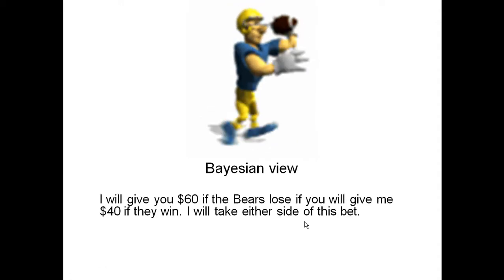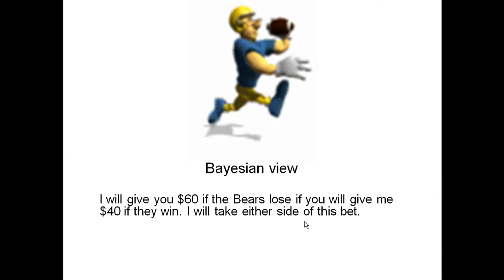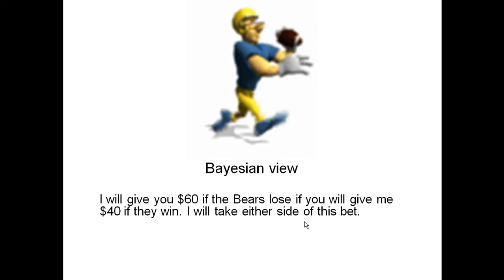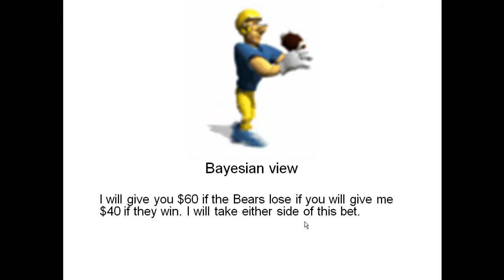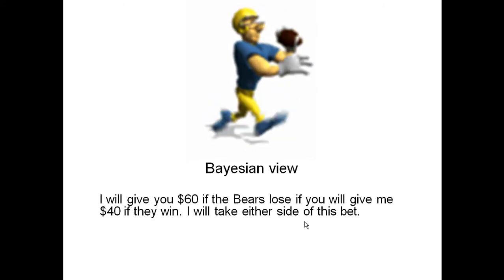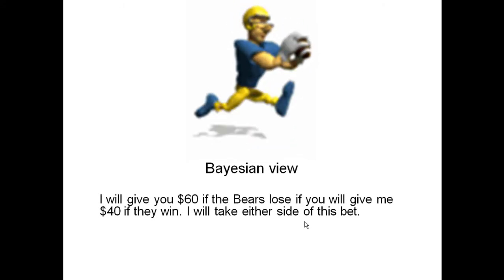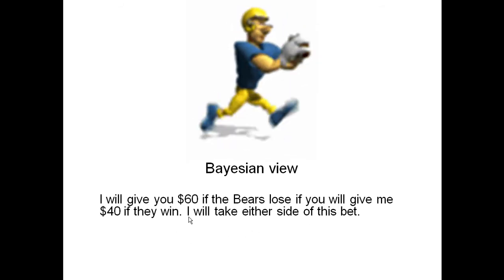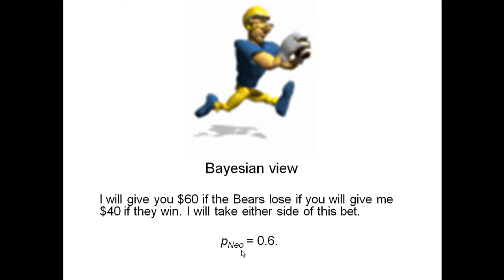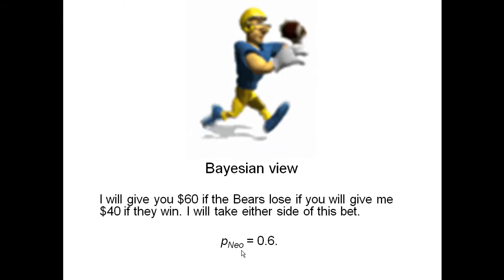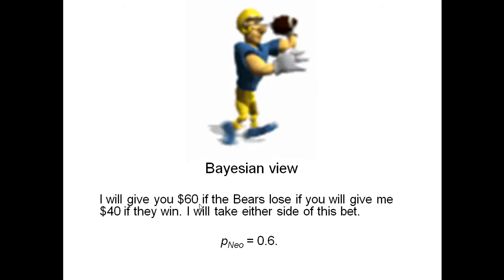The Bayesian view is that not everything can be handled by a relative frequency. For instance, if you're going to watch a football game, many people bet on football games and want to know the chances of one team winning — that's not a relative frequency. You don't repeat that same game over and over again under the same circumstances. But you can view it in terms of betting behavior. If I think the Bears are more likely to win, I might say I'll give you $60 if the Bears lose if you give me $40 if they win. If I'd take either side of this bet, then according to the Bayesian view the probability is 0.6. I call it P sub Neo because this is my personal probability — it's not a relative frequency, it's what I believe.